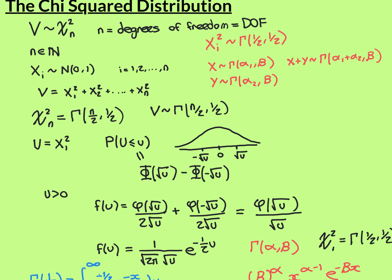We're going to use a fact about gamma distributions. If you have two gamma random variables X and Y, where X is distributed gamma of alpha1, beta and Y is distributed gamma of alpha2, beta — with the same beta parameter — then their sum is distributed gamma of alpha1 plus alpha2, beta. You simply add the two alpha parameters together and keep the same beta parameter. This beautiful addition rule requires the same beta parameter to work.